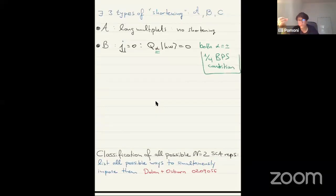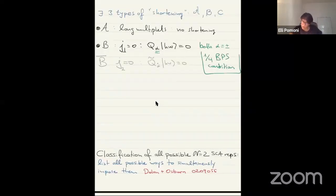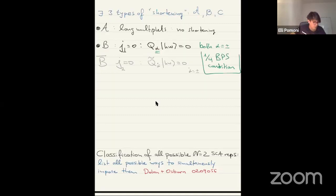This immediately tells me I have two Q's killing this — so this is a one-quarter BPS condition. N equal to two theories have eight Q's, and two out of eight is one fourth, which is why it's called one-quarter BPS. Similarly, you can call B-bar the condition where J2 is equal to zero, where Q-tilde acting on the highest weight is zero — again a quarter BPS condition where both alpha-dot equal to plus-minus does this job.